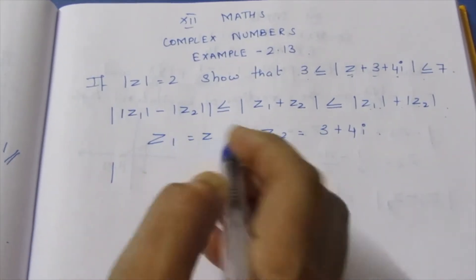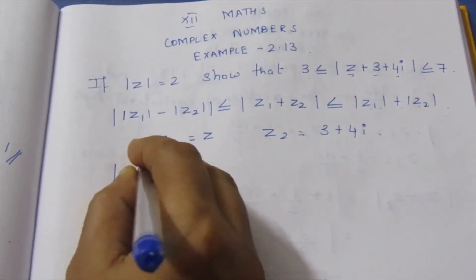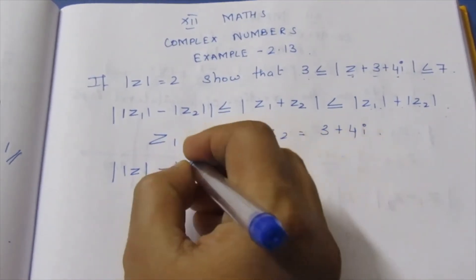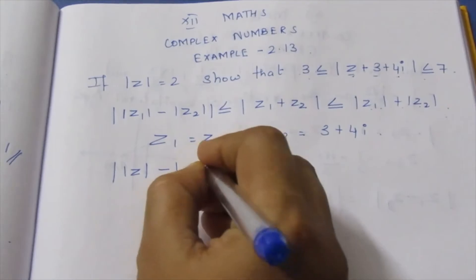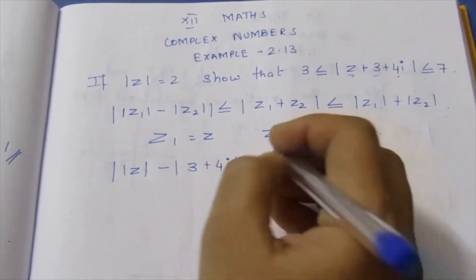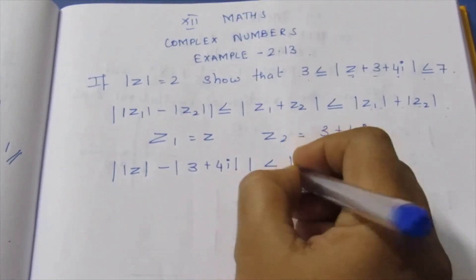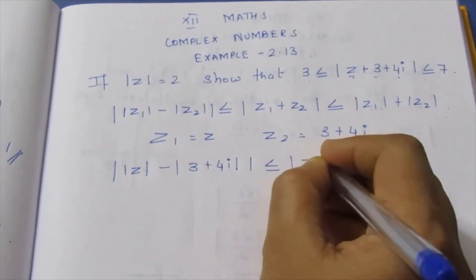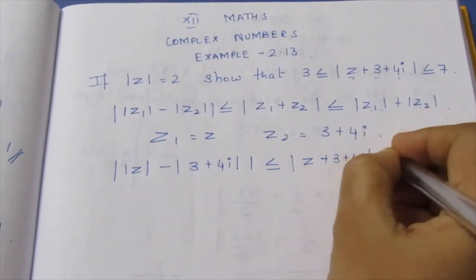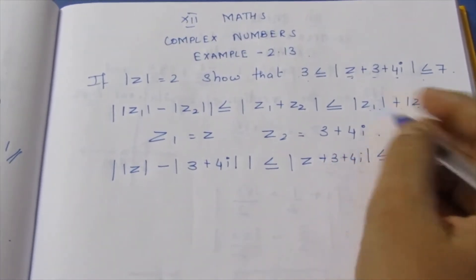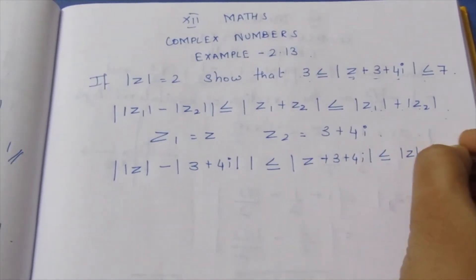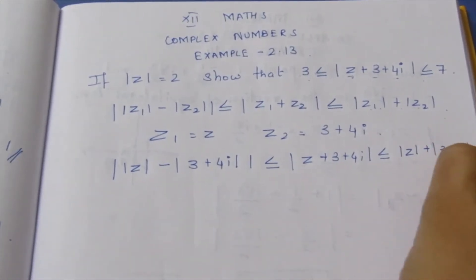Substituting: modulus Z1 minus modulus of 3 plus 4i is less than or equal to modulus Z plus 3 plus 4i, which is less than or equal to modulus Z plus Z2, plus modulus of 3 plus 4i.